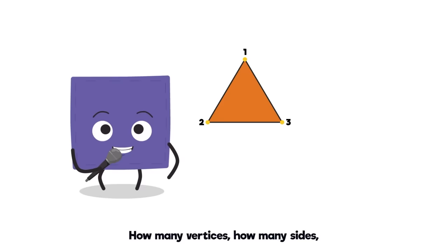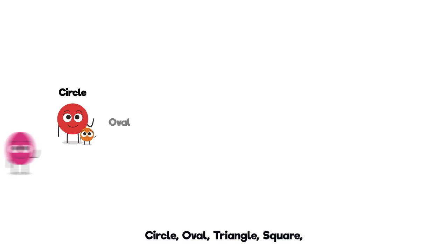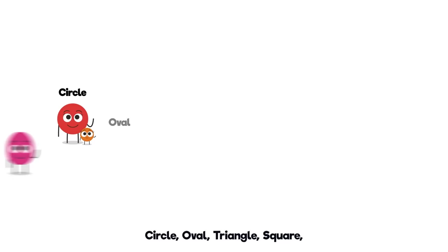Hey shapes, where you been? Tell us all about the shape you're in. How many vertices, how many sides? What kinds of angles and what kinds of lines? Give us anything that you can identify. Circle, oval, triangle, square. Rectangle, rhombus, trapezoid, trapezium. Circle, oval, triangle, square. Rectangle, rhombus, trapezoid, trapezium.